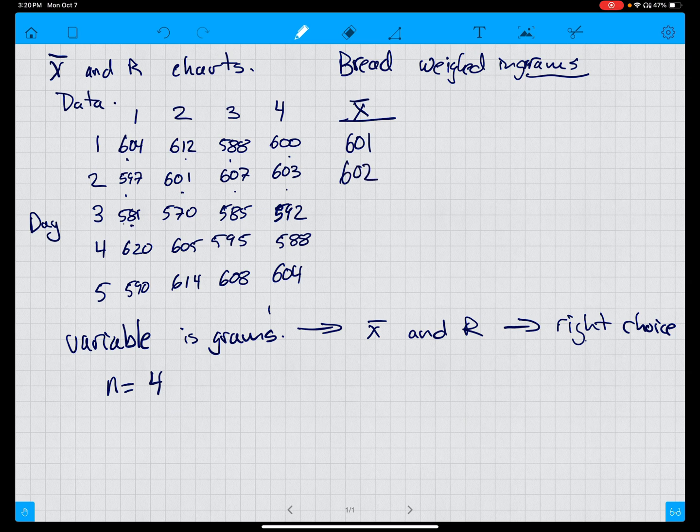581, 570, 585, 592. So this day they're a bit lighter, but the average is 582. 620, 605, 595, 588 is 602. 590, 614, 608, 604 is 604. So there we have the averages. Now we want to do the range.